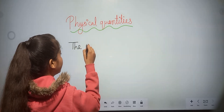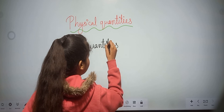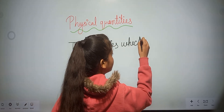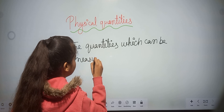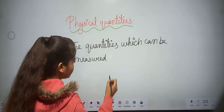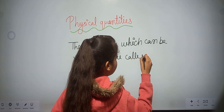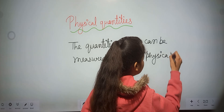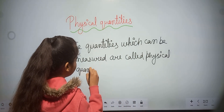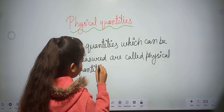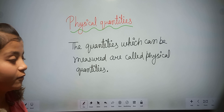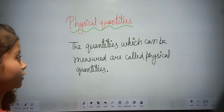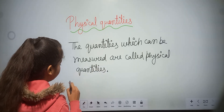The quantities which can be measured are called physical quantities. That means the quantities that we are able to measure are called physical quantities. For example...